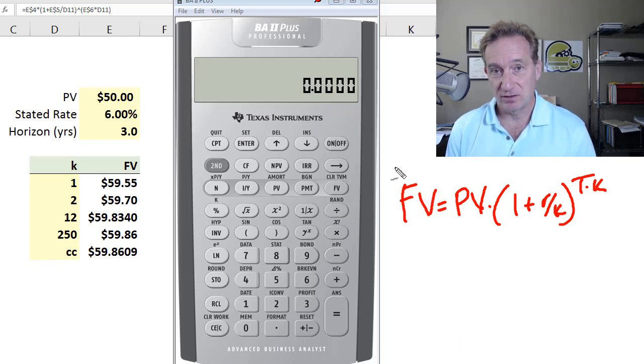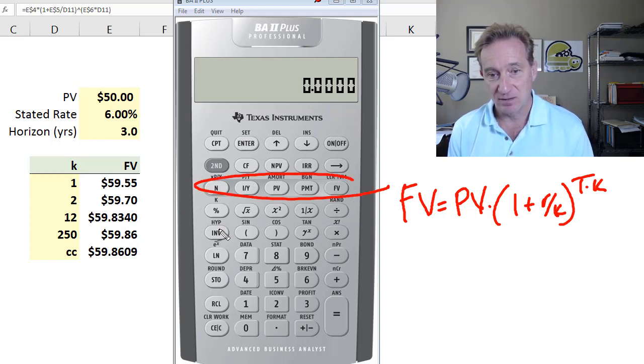This video will illustrate using the calculator for very simple lump sum calculation of translating a present value to a future value. So compounding forward at various compound frequencies for the discrete version of that. I'll show you two ways: time value of money, but also just the manual calculation.